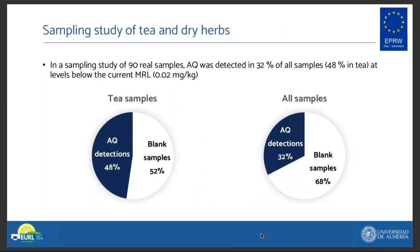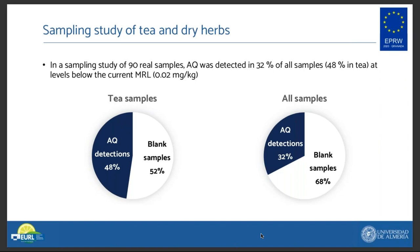The automated method was applied to a sampling study of 90 real samples. Anthraquinone was detected in one third of the samples analyzed, but this number rose to half of the samples if only tea was considered. The concentration of anthraquinone in every case was below the current MRL of 20 ppb. Finally, this method was also evaluated in a proficiency test — a ring test for anthraquinone in black tea — obtaining a Z-score of 0.1. This confirms its performance for the analysis of the target compound in tea.